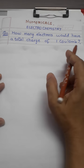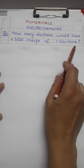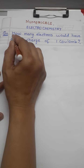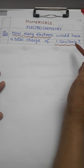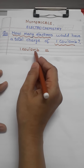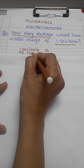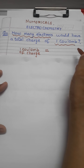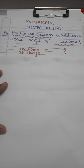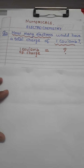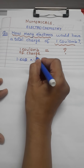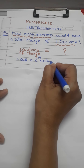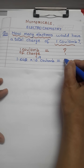How many electrons would have a total charge of 1 coulomb? They are asking how many electrons will be carrying a charge of 1 coulomb. To solve this, we should have our basics clear. We know very well that 1.602 × 10⁻¹⁹ coulomb charge is carried by 1 electron.